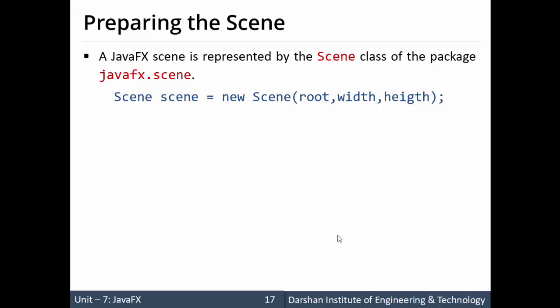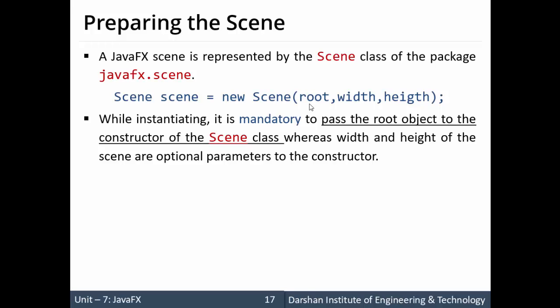To create a scene, we make an object of the Scene class: Scene scene = new Scene(rootNode, width, height). There are three arguments: the root node (the scene graph's root node), and the width and height of the scene. The root node must be passed compulsorily, while width and height are optional.